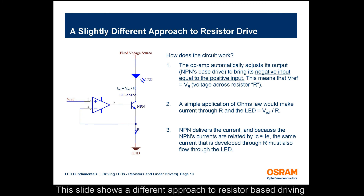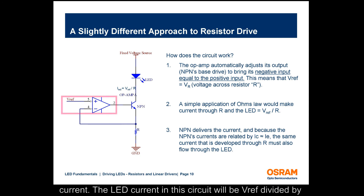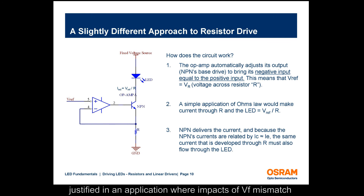This slide shows a different approach to resistor-based driving using a transistor and an op amp. In this way of driving, the VF mismatch and source variations will not change the LED current. The LED current in this circuit will be VREF divided by resistor R. The addition of a transistor and an op amp can be justified in an application where impacts of VF mismatch and source variation cannot be tolerated.